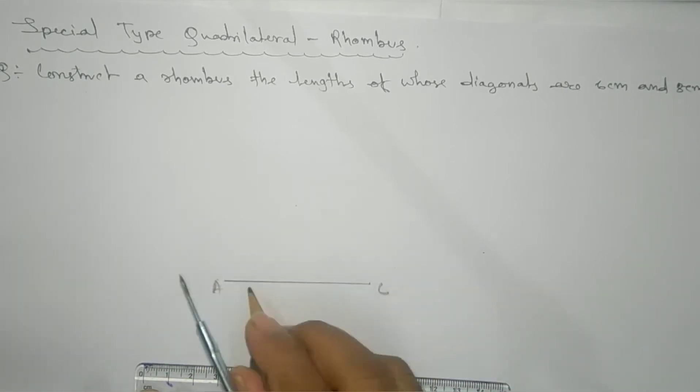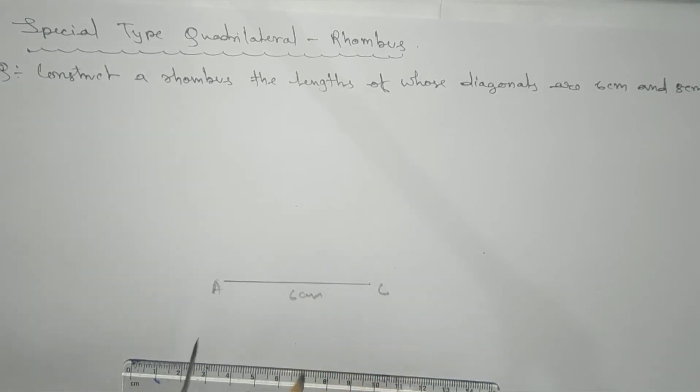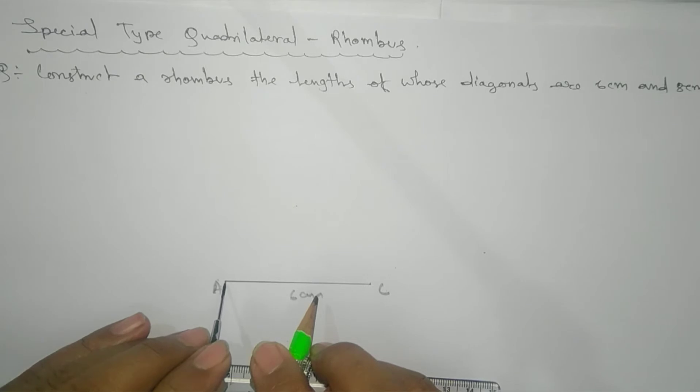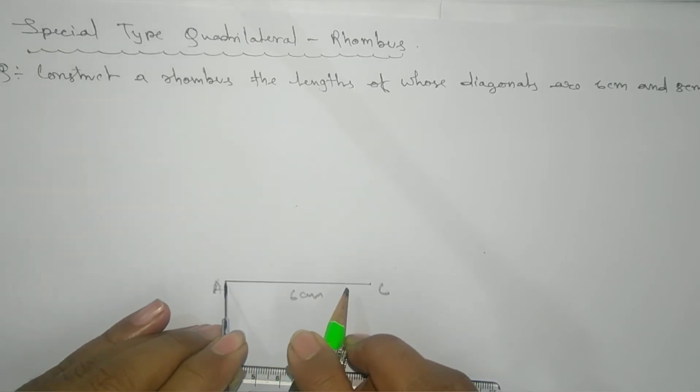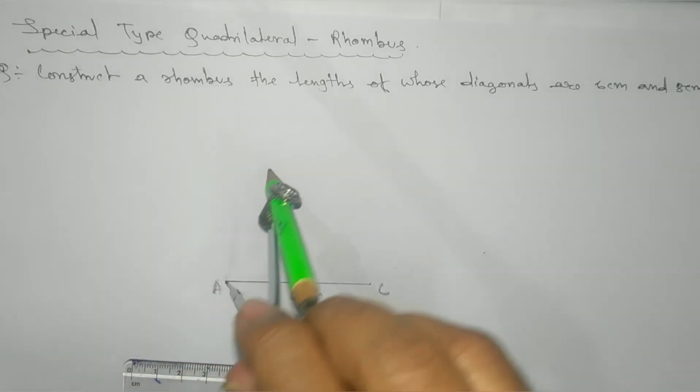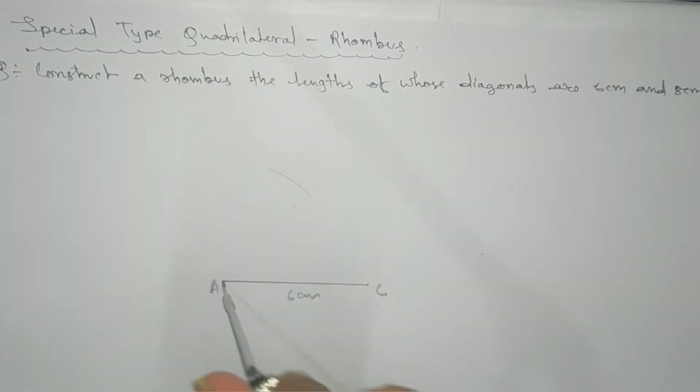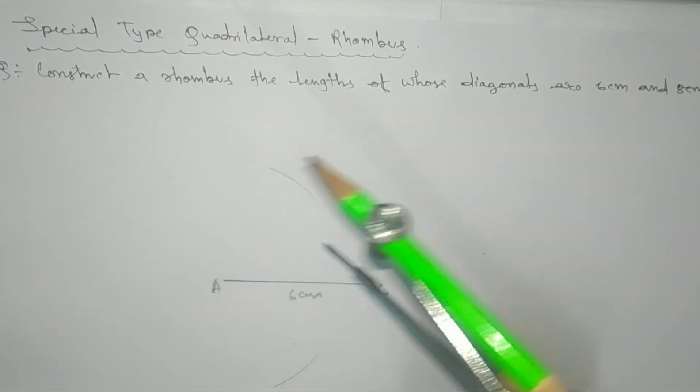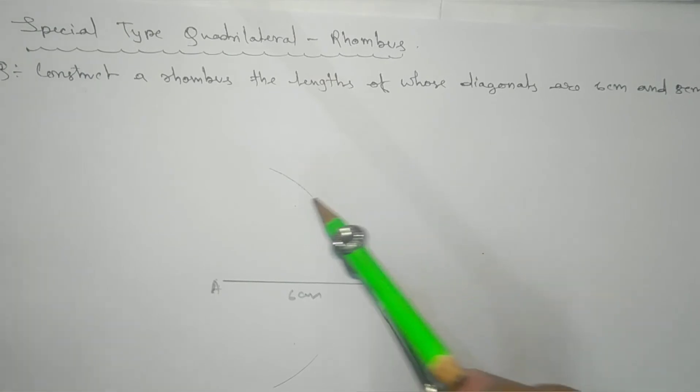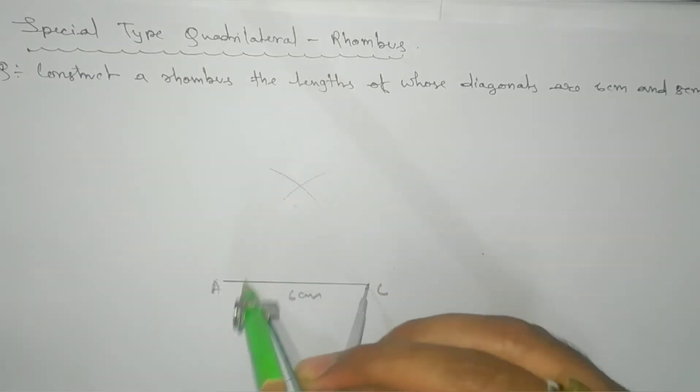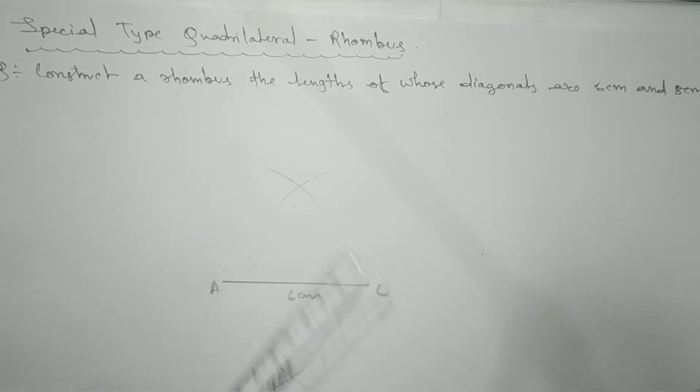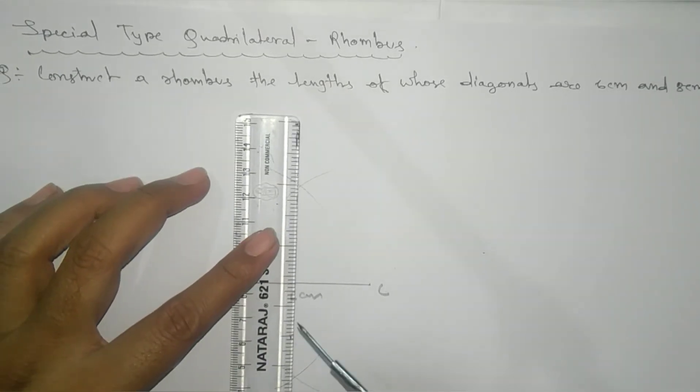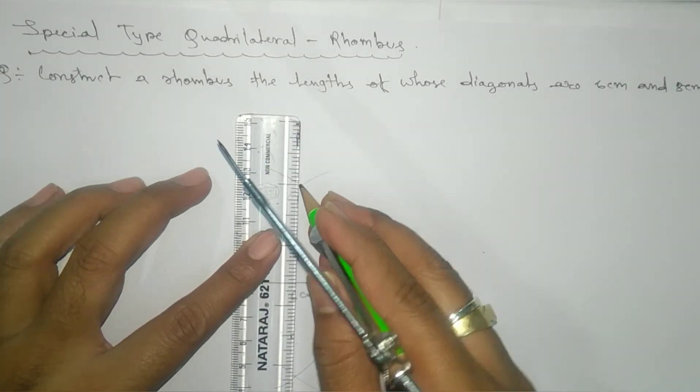This will be your diagonal, this is 6 centimeter. Now we're going to take the perpendicular bisector of it. From here, more than half, we'll take the arc on this side and similarly this side. Without changing, we'll take here and this side.